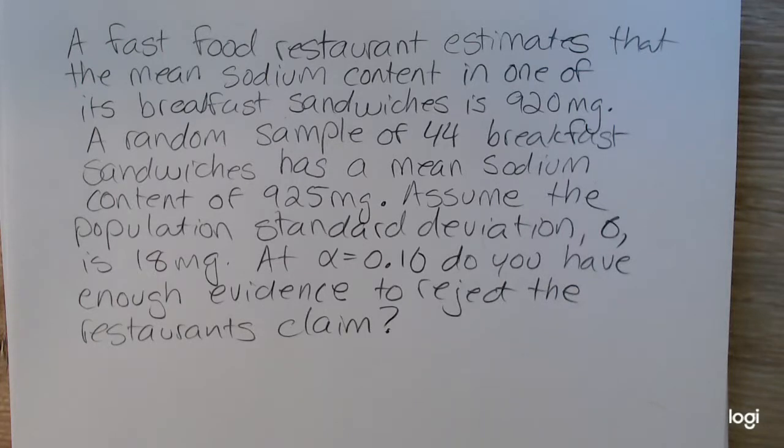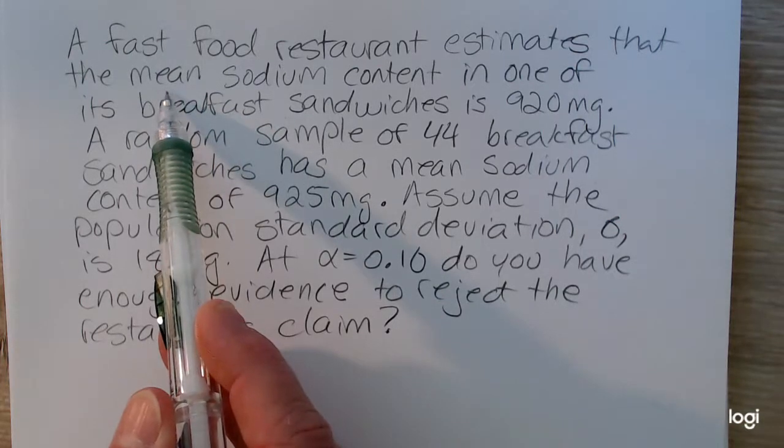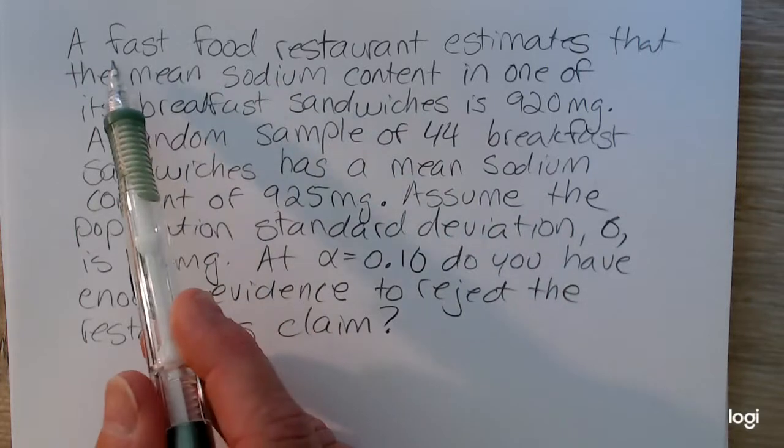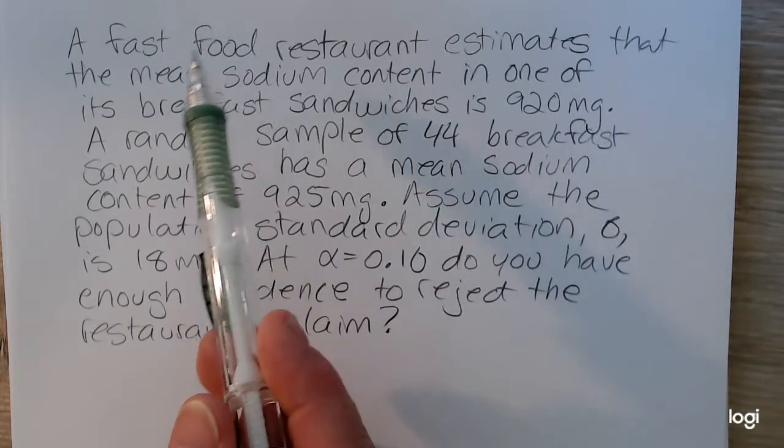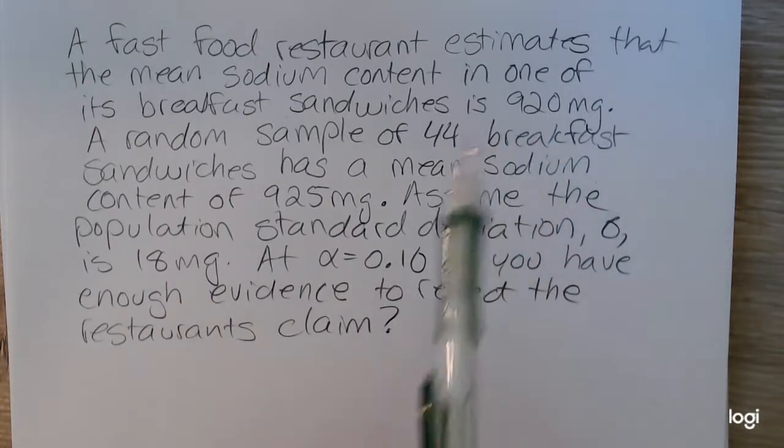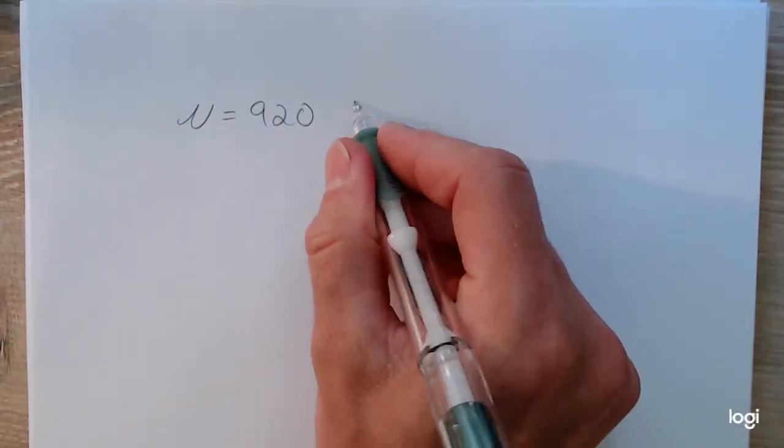The first thing you want to do is read the problem carefully and identify the claim as stated or implied in the problem and write it in terms of a mathematical statement using the correct population parameter. The parameter being tested is mu because this is a claim about a mean. It's implied that this is the claim. The mean sodium content is 920 milligrams, so writing that as a mathematical statement, it's mu equal 920. This is the claim.